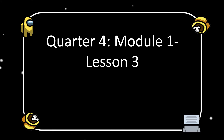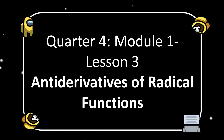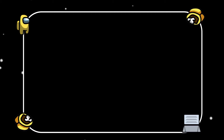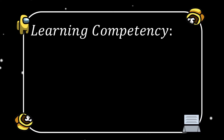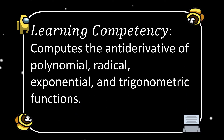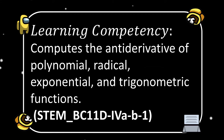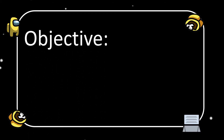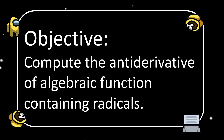We are now in Quarter 4, Module 1, Lesson 3: Anti-derivatives of Radical Functions. The learning competency is to compute the anti-derivative of polynomial, radical, exponential, and trigonometric functions. The objective is to compute the anti-derivative of algebraic functions containing radicals.